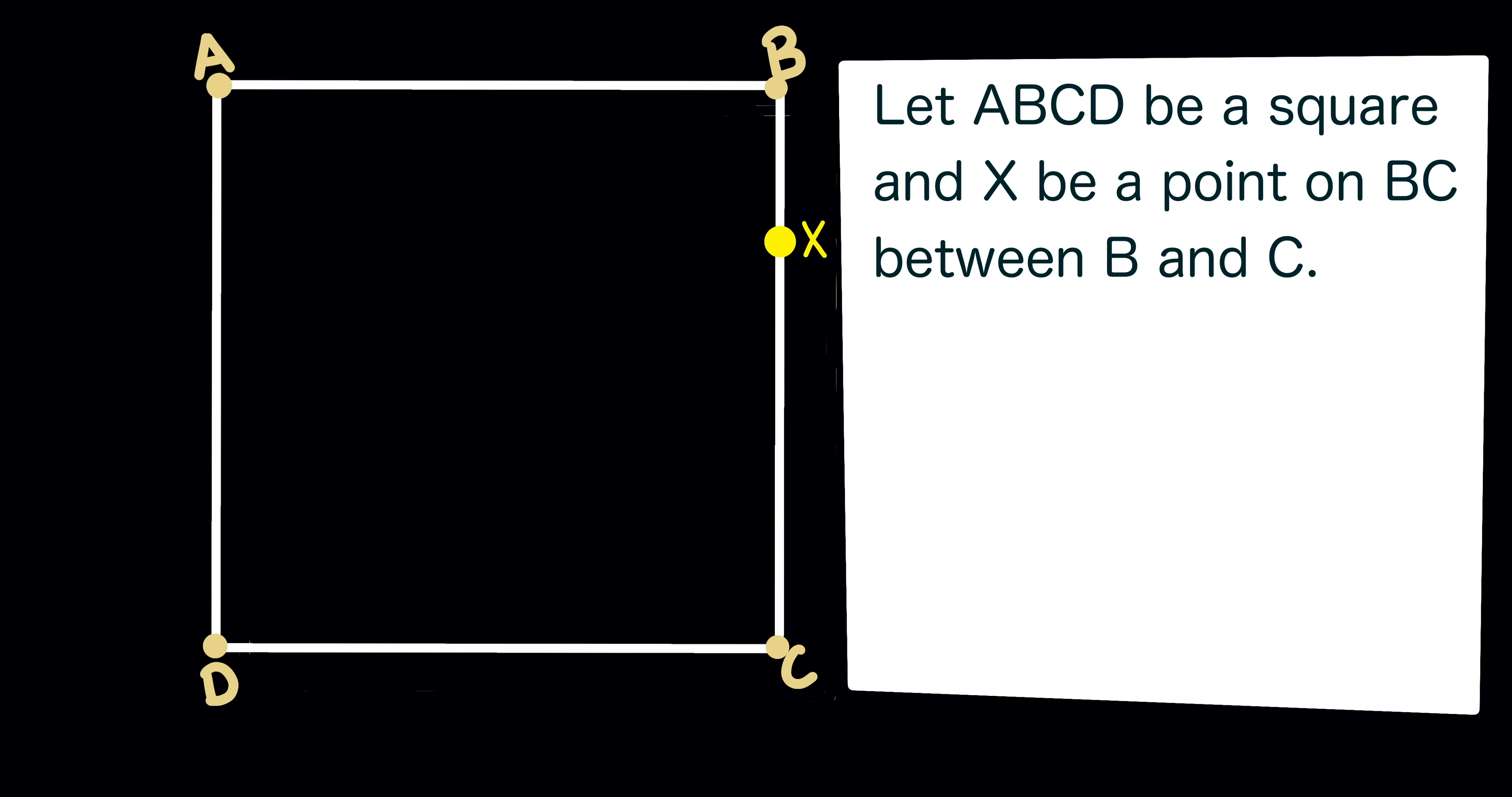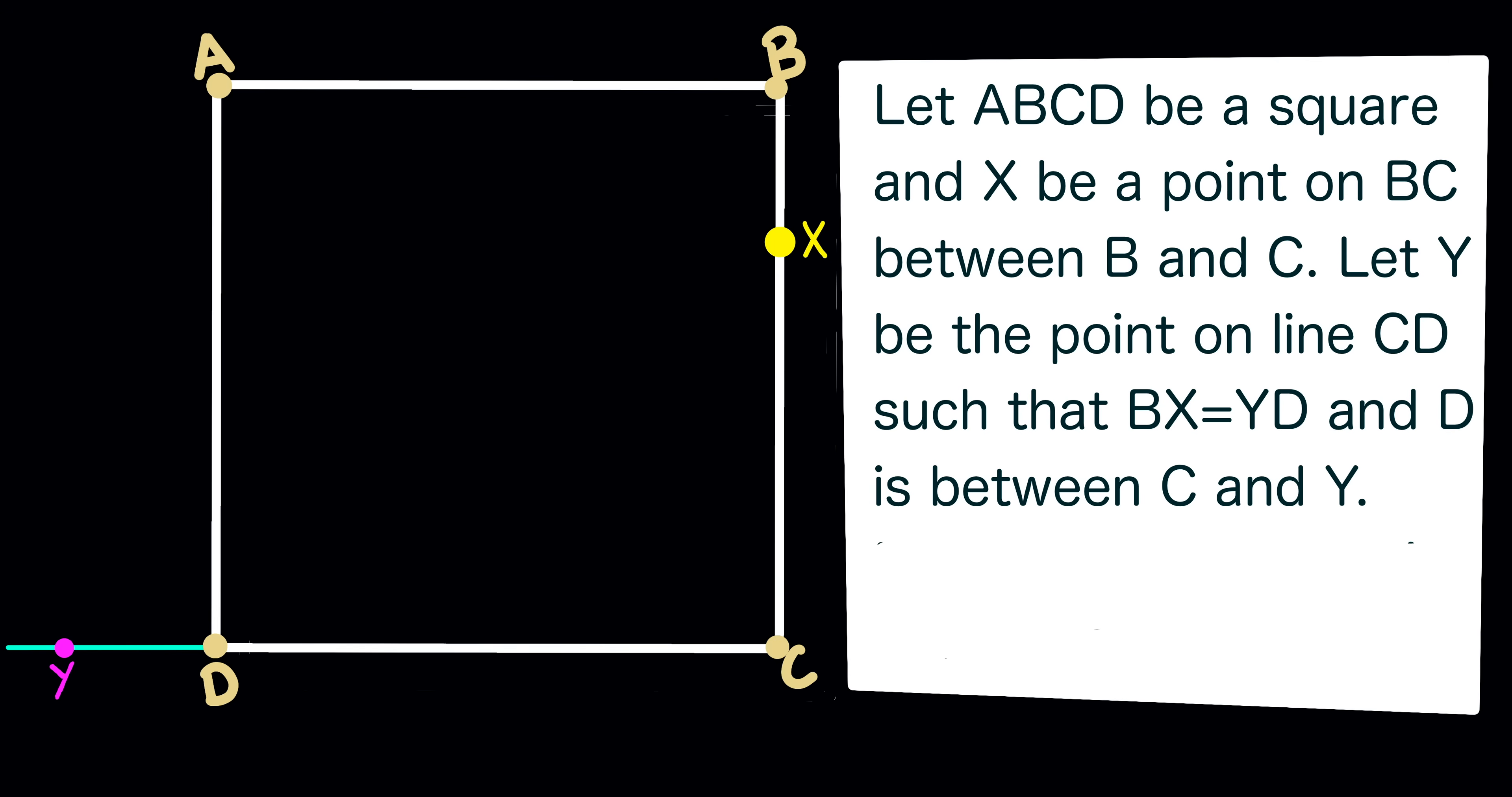Next, we'll let Y be a point on the line CD such that BX equals YD, and D is between C and Y. So if you're keeping track of that, that means that Y is on the ray containing C and D to the left of D by the picture that we're drawing.